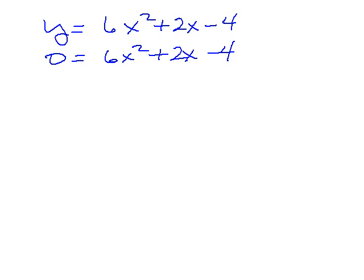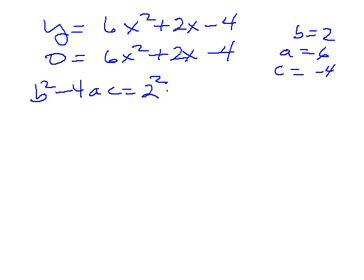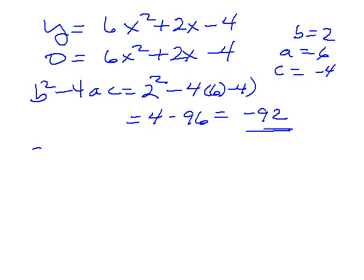Let's say the equation is y = 6x² + 2x - 4. I'm looking for roots, so I'm really looking for the solution of 0 = 6x² + 2x - 4. Now I want to look at b² - 4ac. b is 2, a is 6, and c is -4. Plugging that in, I would have 2² - 4(6)(-4), which is 4 - 96 = -92. This is less than zero, so the roots are a complex conjugate pair.